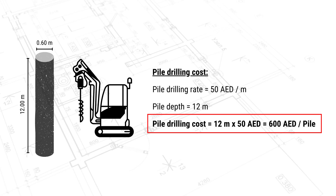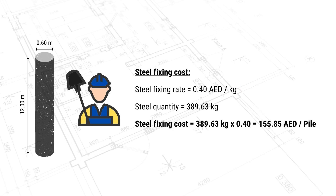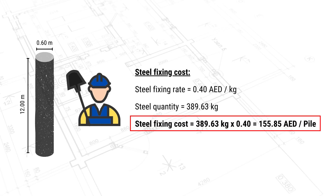The fourth cost element is the steel fixing cost for the pile cage. If the steel fixing rate is 0.4 dirhams per kilogram, and the steel quantity is 389.63 kg, then the steel fixing cost = 0.4 × 389.63 = 155.85 dirhams per pile.